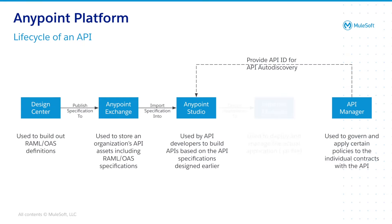After finishing the API implementation and proper testing of your API, you will probably want to deploy your new API so that your end users and consumers can finally use it. In order to do so, you can use AnyPoint Runtime Manager to deploy and manage your deployable — which is a JAR file — to your choice of target. It could be CloudHub, an on-prem standalone Mule Runtime, or Runtime Fabric for example.